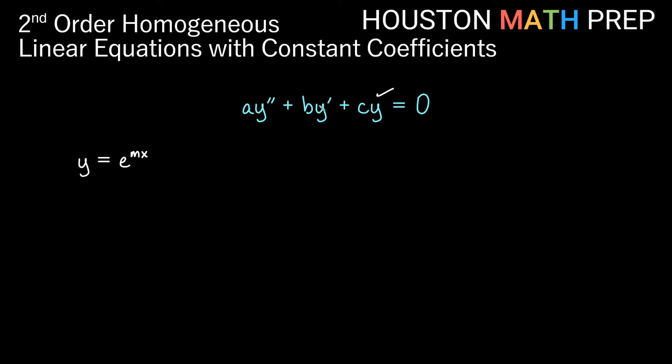And then we would need y prime and y double prime. So we said y prime, the m is going to come out from the chain rule, we'll just get m e to the mx. The y double prime, another m is going to come out, we'll just get another constant multiple, so we'll get m squared e to the mx. So that'll give us replacement for that and that. We could go ahead and just put all that in there. So let's go ahead and do that.